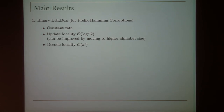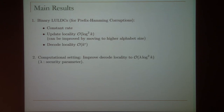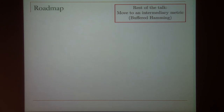Let me go ahead with the construction for LULDC. Our binary LULDCs for prefix Hamming corruptions have constant rate, an update locality of log squared k, and a decode locality of k to the epsilon. We're able to improve the decode locality to lambda log squared k, where lambda is the security parameter, by moving to the computational setting. For the rest of the talk we're going to move to an intermediary metric called the buffered Hamming metric.